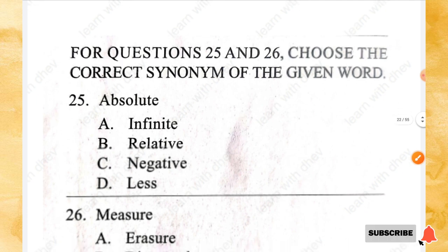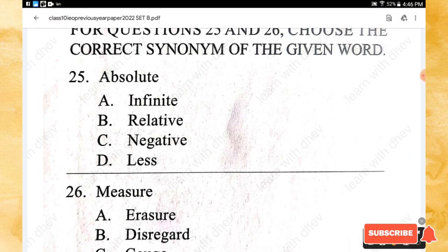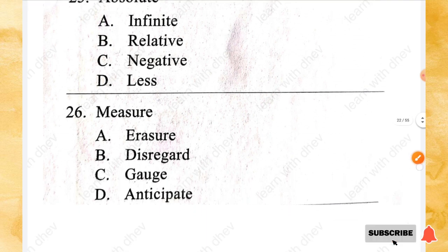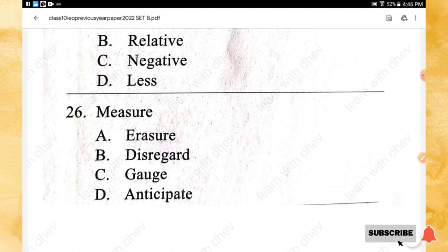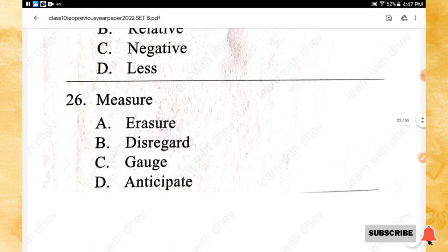For questions 25 and 26, choose the correct synonym. Question 25: Absolute — options: infinite, relative, negative, less. The right answer is option A — infinite. Question 26: Measure — options: eraser, erasure, disregard, cage, anticipate. The right answer is option C — cage.